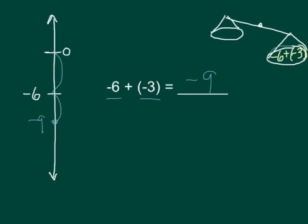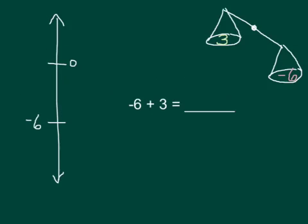You could also see that they would belong on the same side of the scale. Negative 6 plus a positive 3. We have more negatives than positives, as you can see on the scale. 6 negatives, 3 positives.